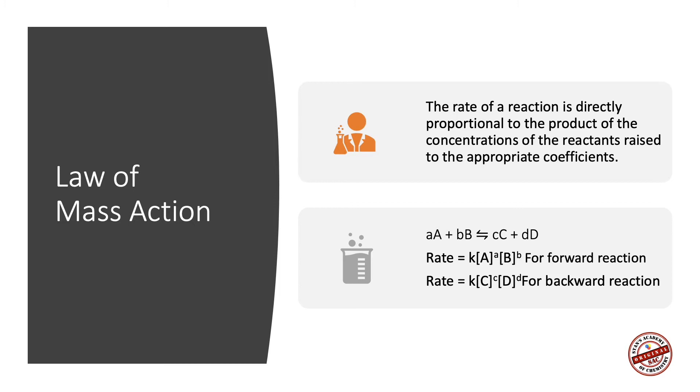At equilibrium, the numerical value for the rate of the forward reaction and rate of the backward reaction shows constancy. This is referred to as the Law of Mass Action.